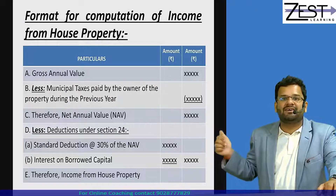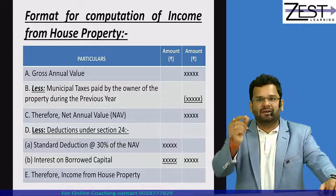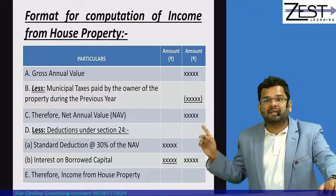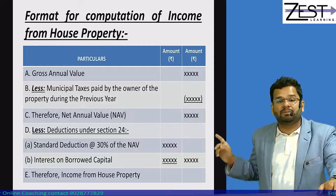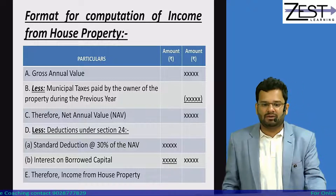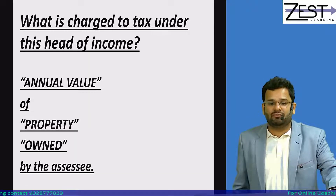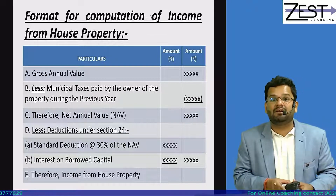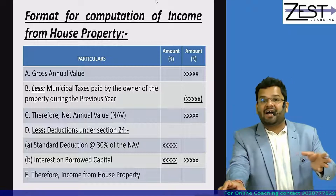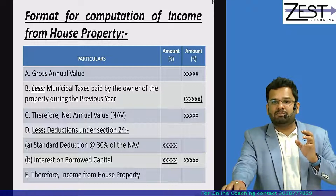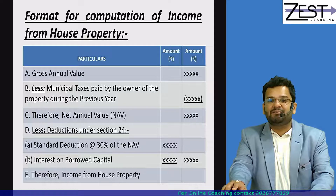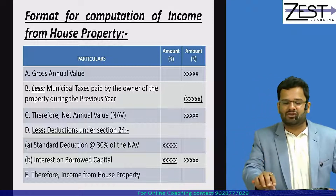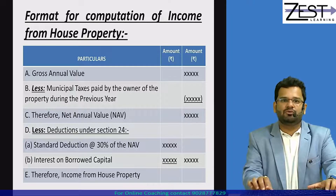The two deductions are: first, standard deduction — in salary it was a flat 50,000 rupees, but here standard deduction is 30% of the Net Annual Value. Second, you can take deduction of interest on borrowed capital, meaning housing loan interest. Then you get income from house property. So the simple format is: GAV minus municipal taxes gives NAV, minus two deductions (standard deduction and interest on borrowed capital) gives income from house property.